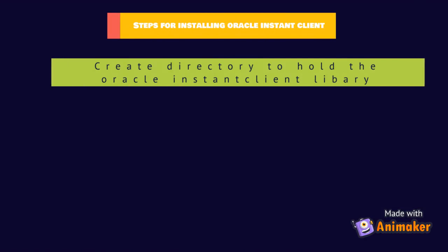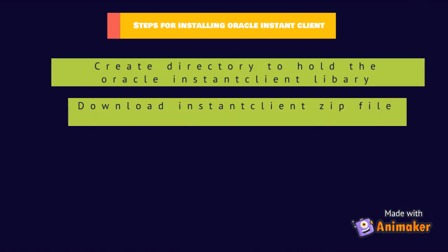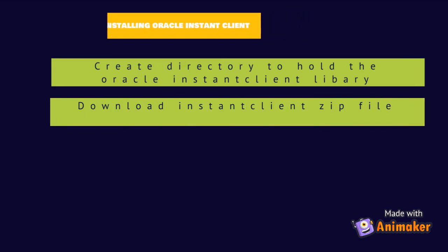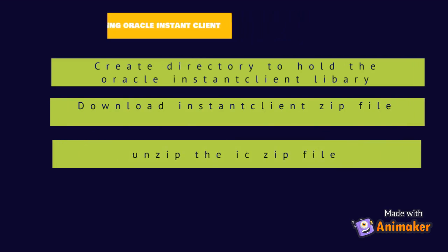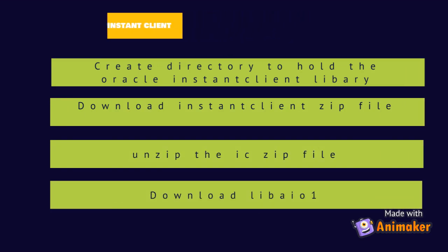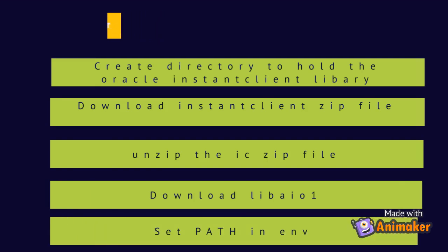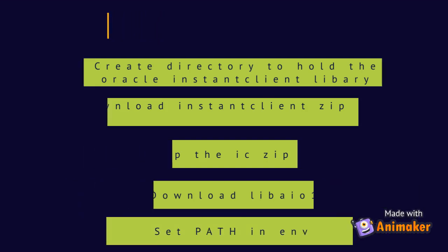Here are the steps for installing Oracle Instant Client. Step 1: Create a directory that would hold the Oracle libraries. Step 2: Download the Oracle Instant Client zip file from the official page. Step 3: Unzip the zip file. Step 4: Download the libaio1 library using the apt-get command. The final step is to set the Oracle paths in the Linux Global Environment variable.